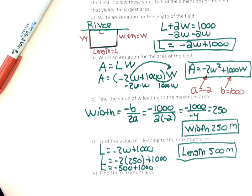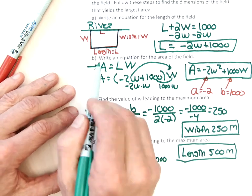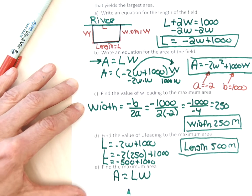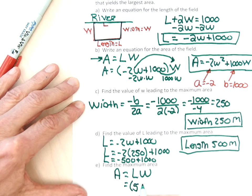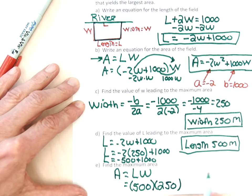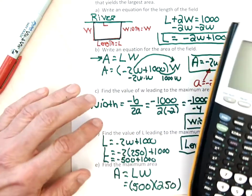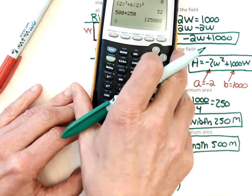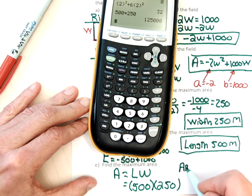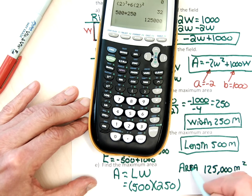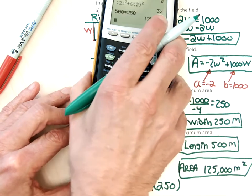For part E, the maximum area, I use area equals length times width. I plug in 500 meters for length (from part D) and 250 meters for width (from part C): 500 times 250 gives 125,000. The units are square meters since area has squared units. So the maximum area is 125,000 square meters.